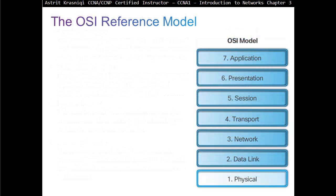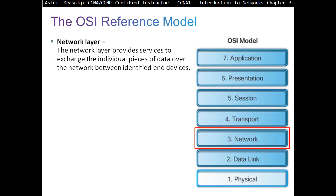The lower layers continue with layer 3, the network layer. The network layer decides how to send data from source to destination using IP addresses. It assigns a source IP address and a destination IP address — those two pieces of information do not change from source to destination. The exception is NAT — Network Address Translation — but that's covered in semester 2.